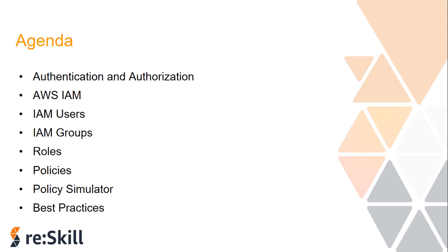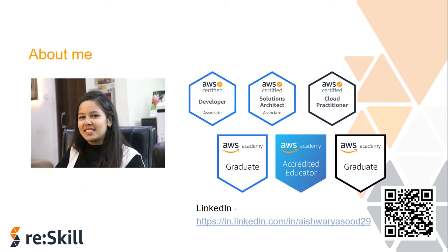A little bit about me: my name is Ashwarya Sud and I am working as a software engineer and AWS trainer. I am 3x AWS certified and also an AWS Academy accredited educator. You can connect with me on LinkedIn — my profile name is ashwaryasud29 — or scan the QR code to quickly view my profile.